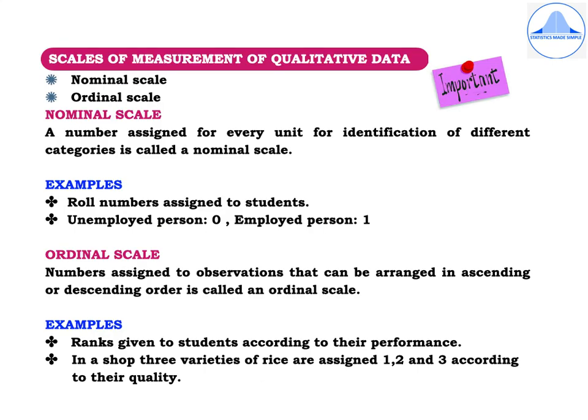The scales of measurement for qualitative data: first, the nominal scale, where a number is assigned to every unit for identification of different categories. For example, roll numbers assigned to students, or where an unemployed person is given the value 0 and an employed person has the value 1. Second, the ordinal scale, where numbers assigned to observations can be arranged in ascending or descending order. For example, ranks given to students according to their performance, or in a shop where 3 varieties of rice are assigned 1, 2, and 3 according to their quality.